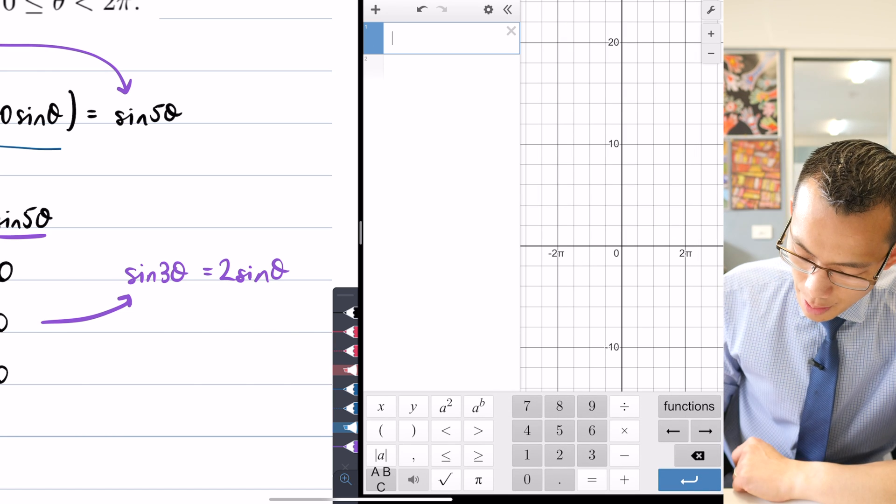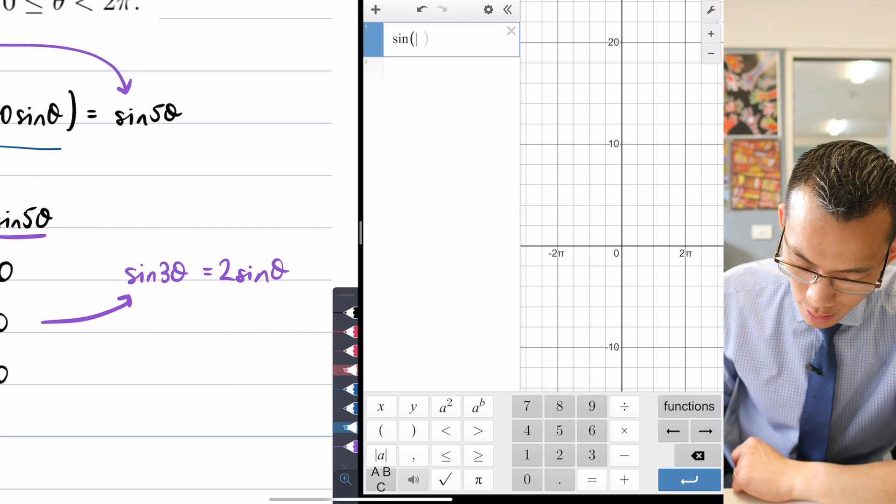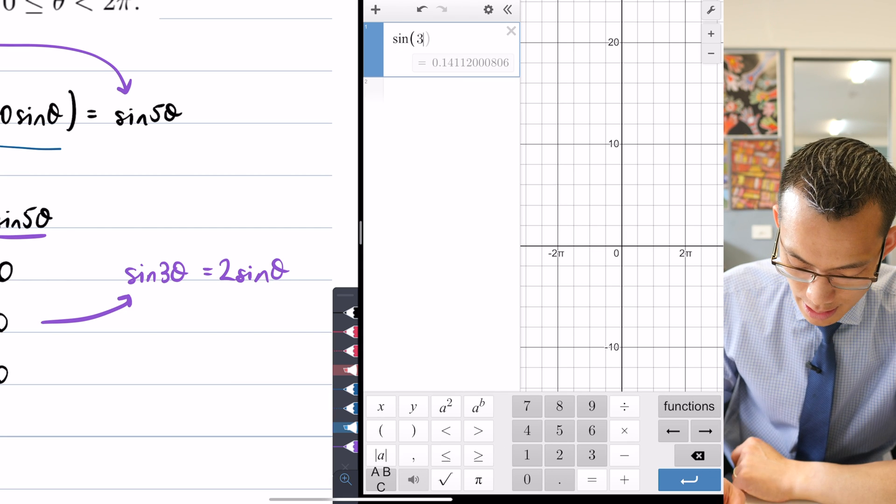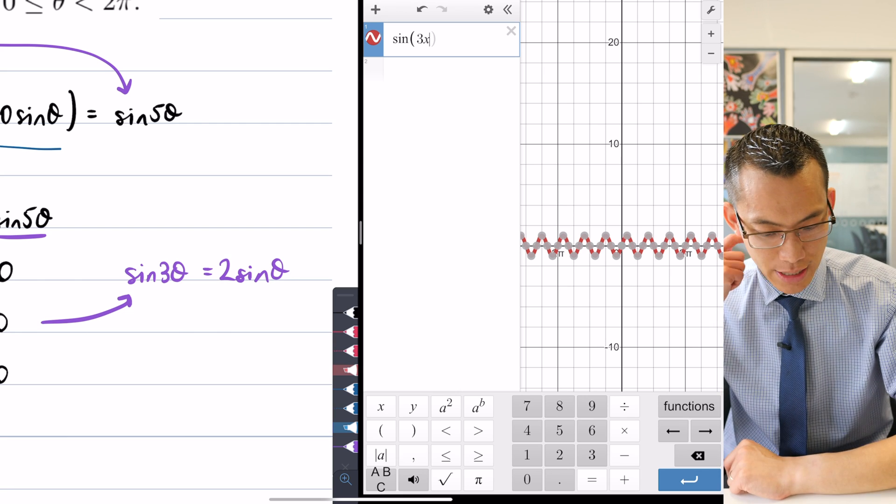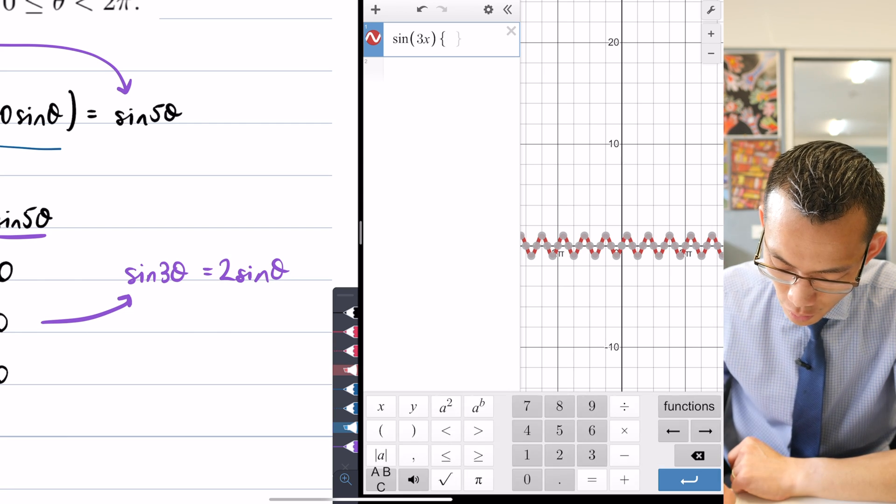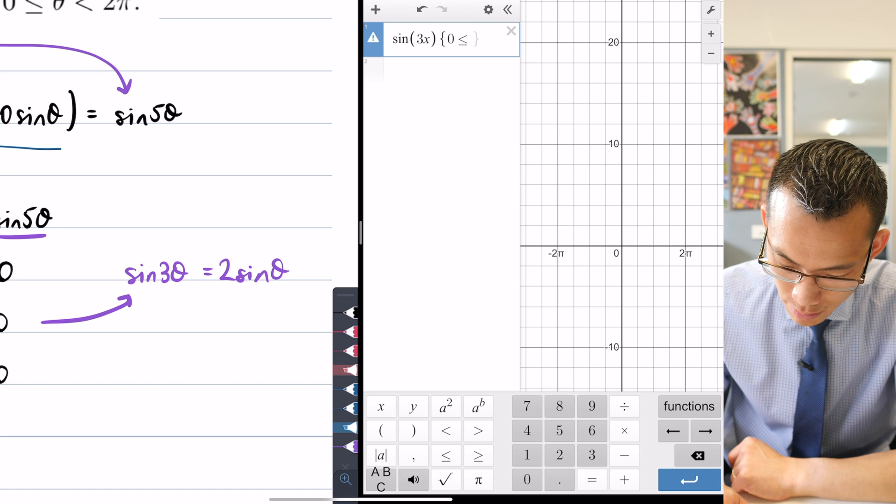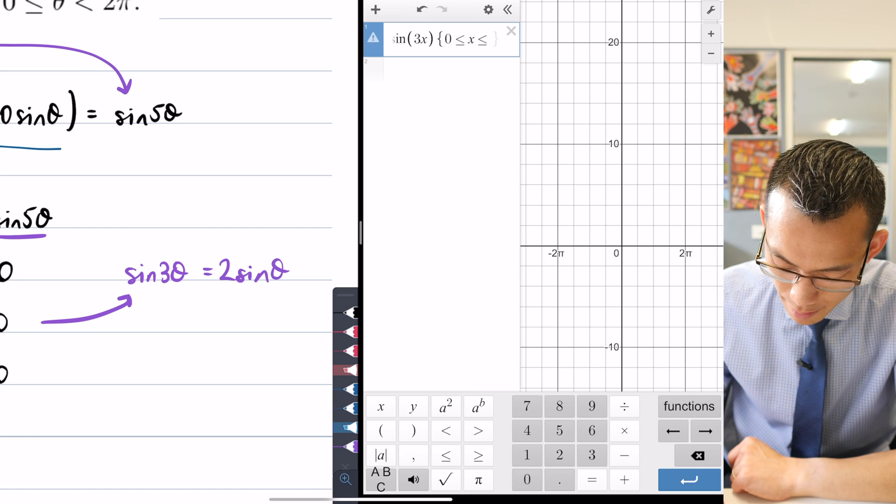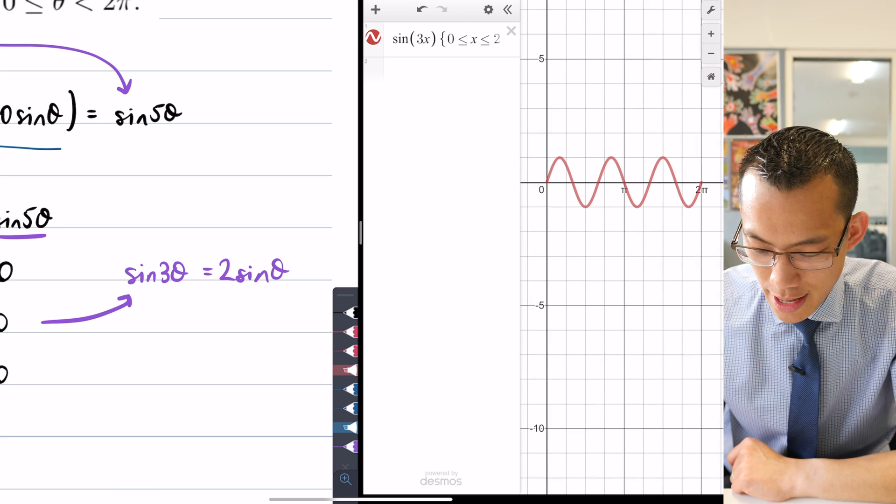All right, so let's have a look. I want in the first instance sine of 3x on the left-hand side. I don't want all of it, I want to restrict it from 0 to 2π. Okay, there we go.